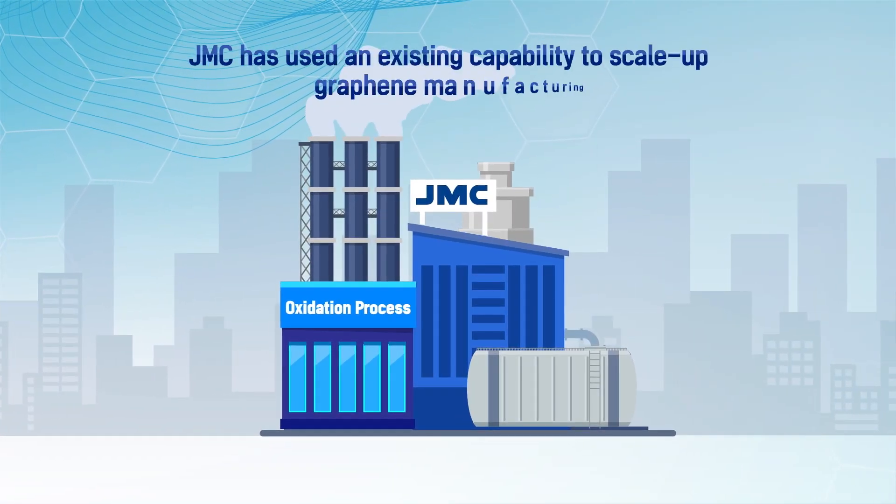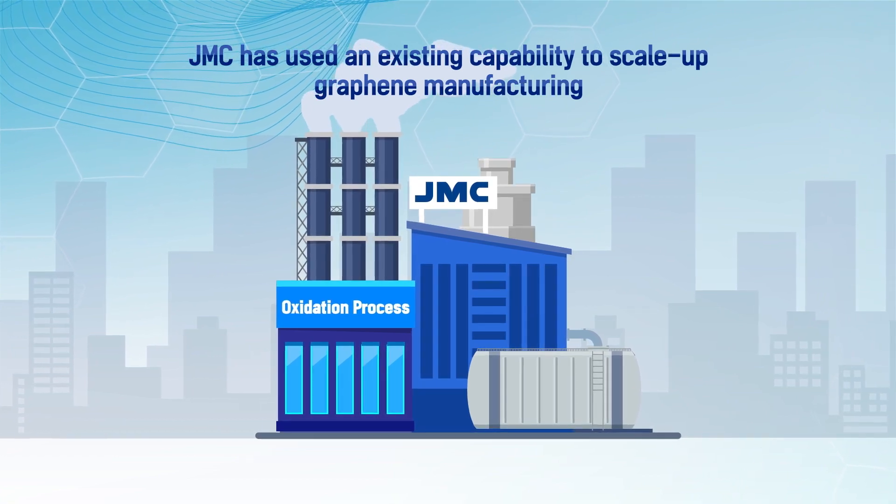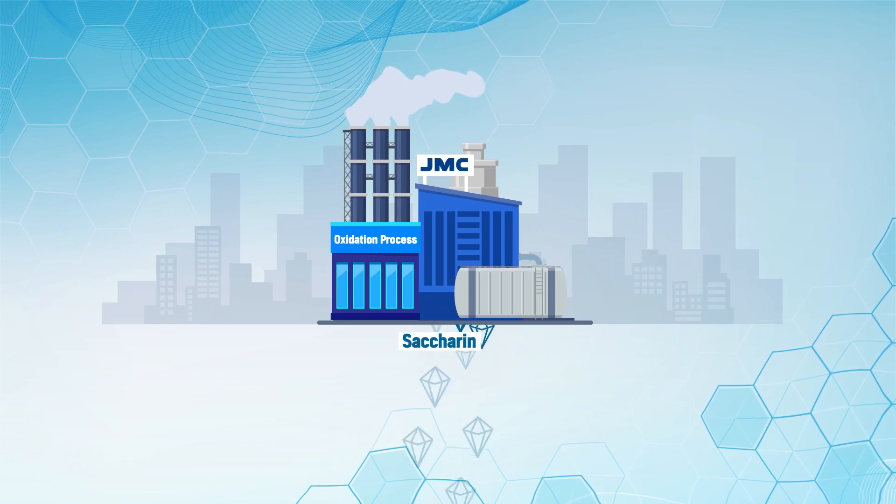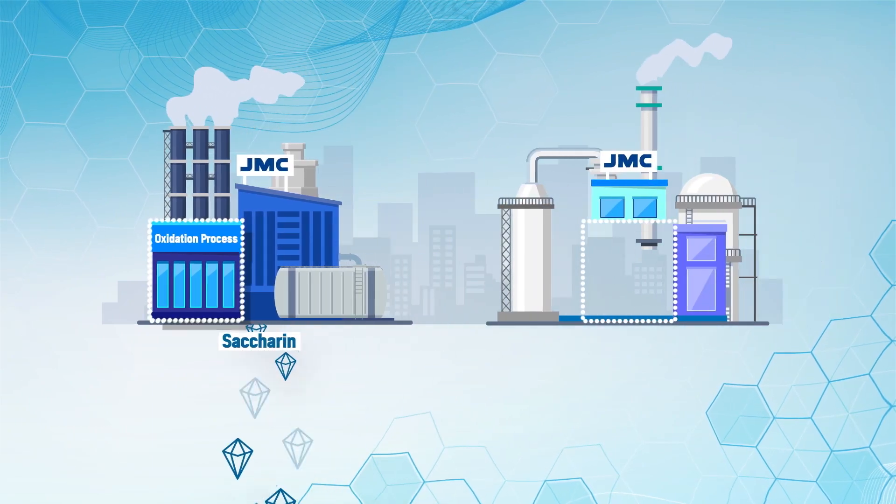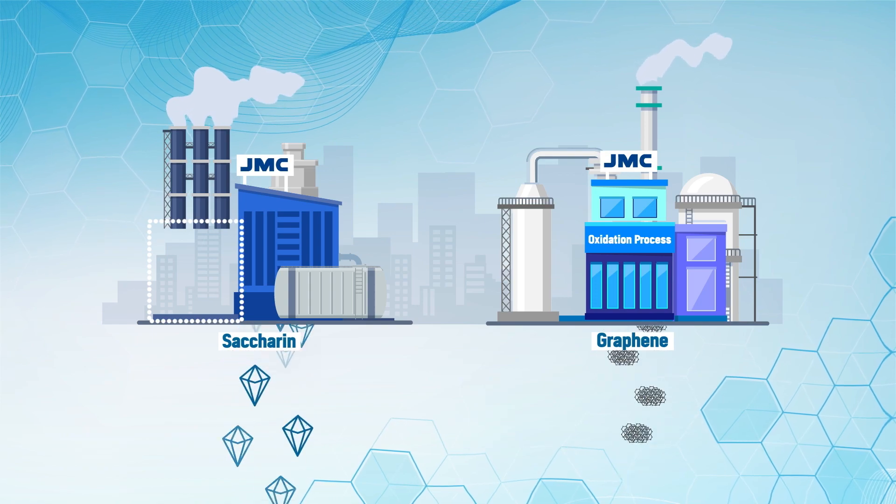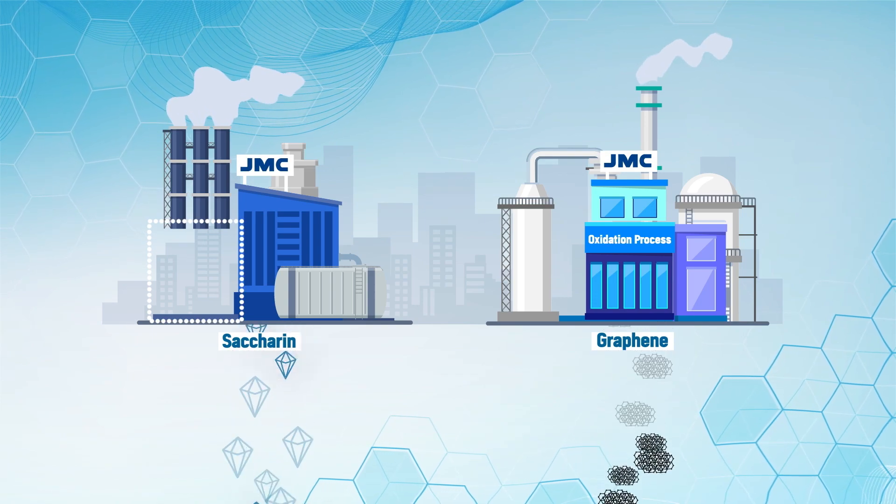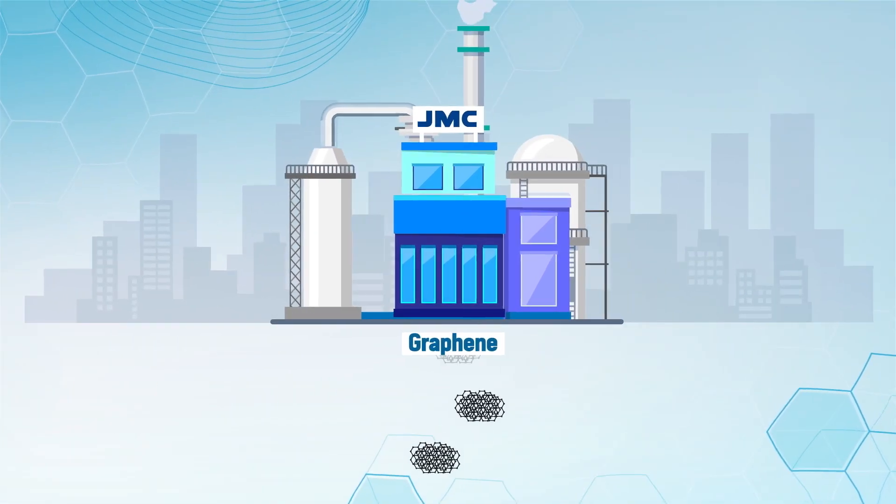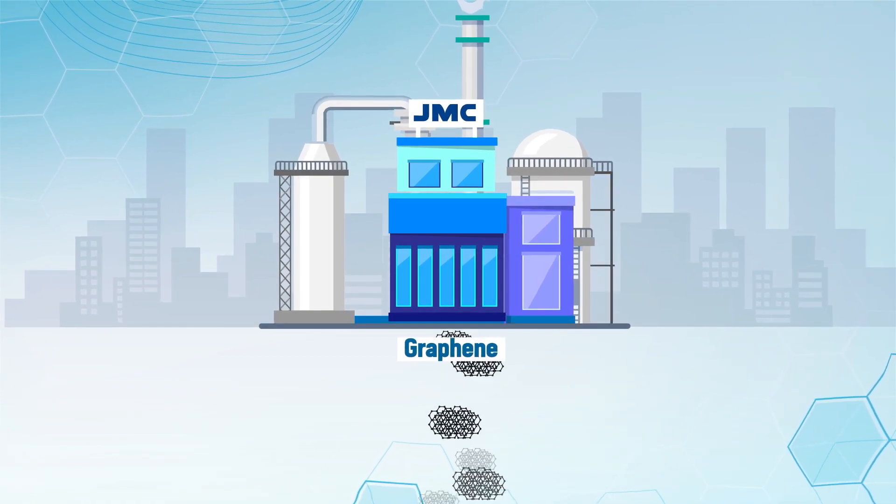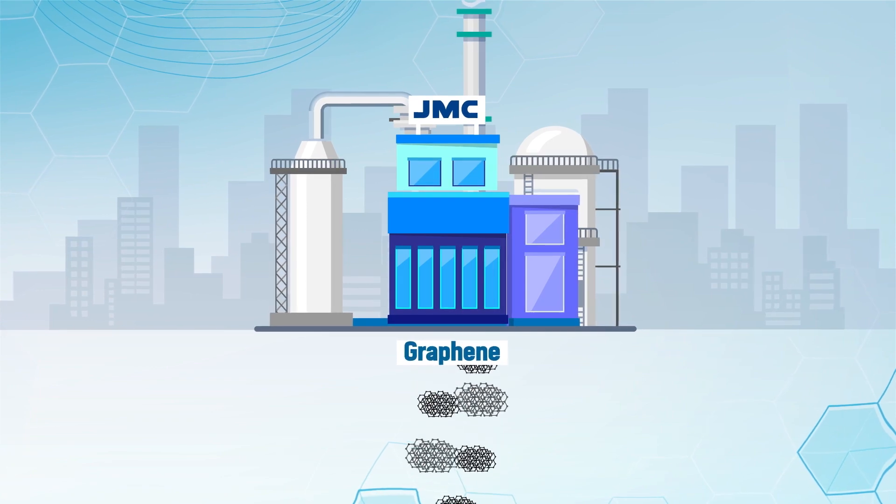JMC has been recognized for its unique infrastructure and technology for manufacturing the world's highest quality saccharine for over 70 years. JMC has now succeeded in the mass production of graphene oxide, which is a raw material for graphene. The secret to that success was the oxidation process and environmentally friendly technologies to handle waste sulfuric acid.